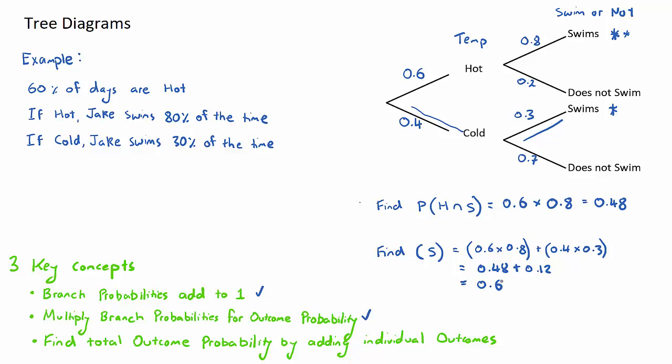Key concepts: branches out of the same point need to add to one. To find an individual outcome probability, we just simply multiply the branches. When we have multiple outcomes, we just add the individual outcomes up. That is the conclusion of this key concept video. I recommend going and practicing some tree diagram probability questions now.